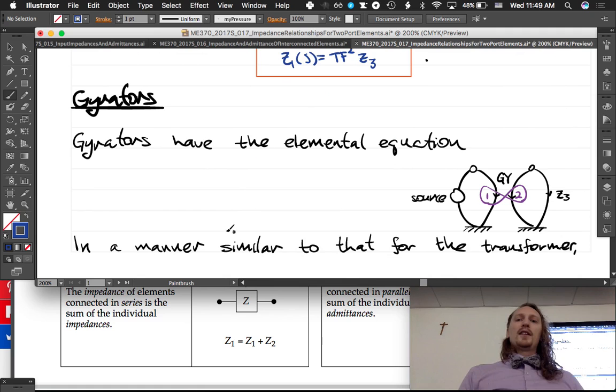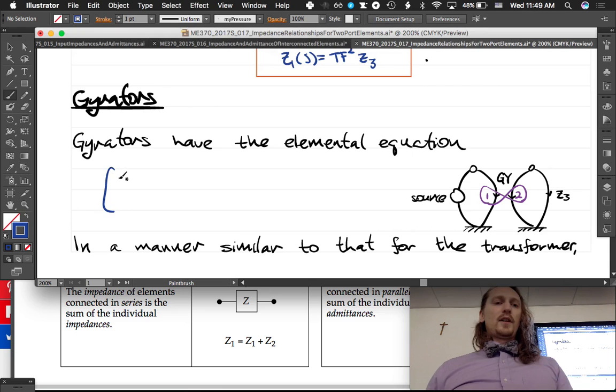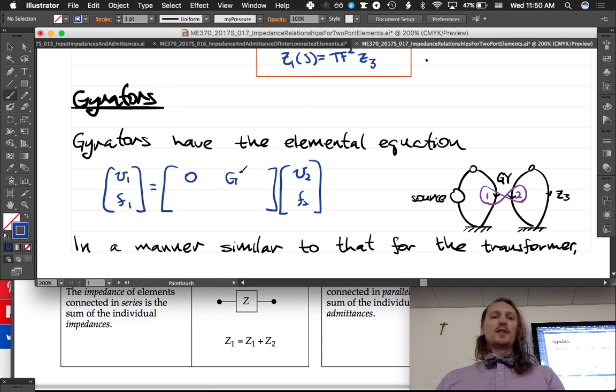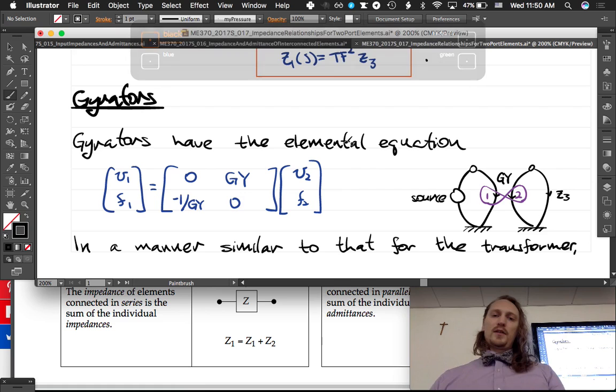Gyrators have the elemental equation. It's very analogous, right? So V1 and F1 are related to the V2 and F2, the across and through variable on the other side. Thanks, guys. Good call. Keeping me honest. This is when I do those video lectures, it's hard. Nobody's keeping me honest. And the GY is called the gyrator ratio, or gyrator modulus.